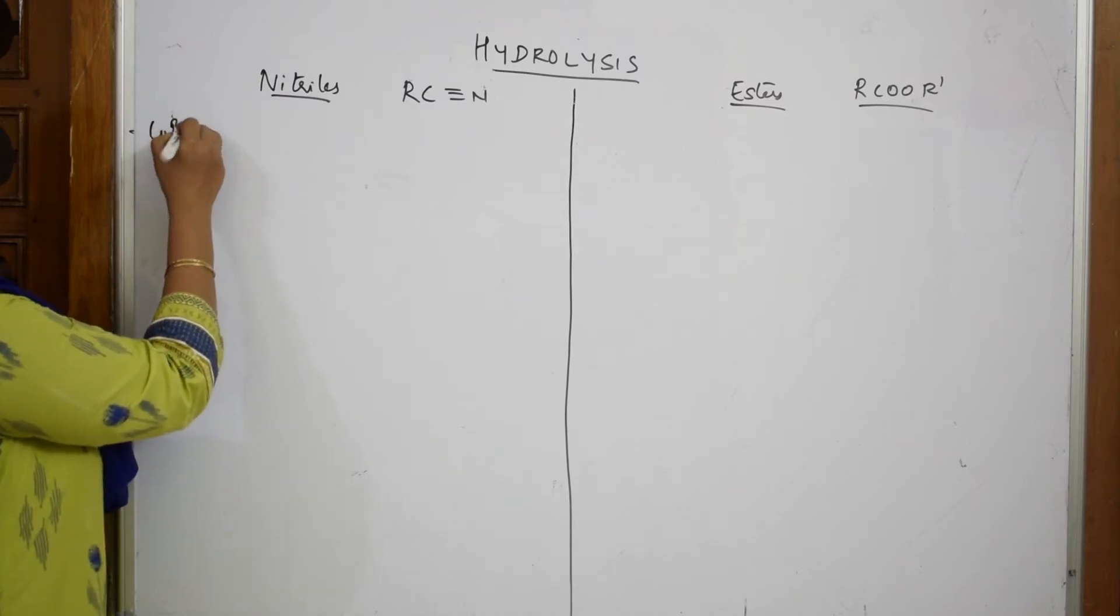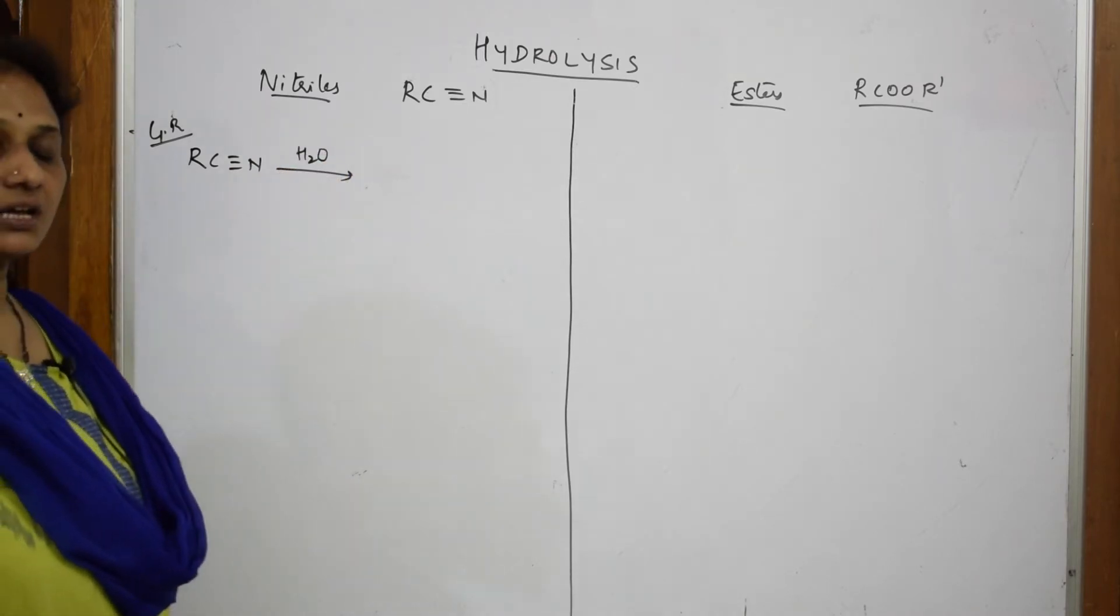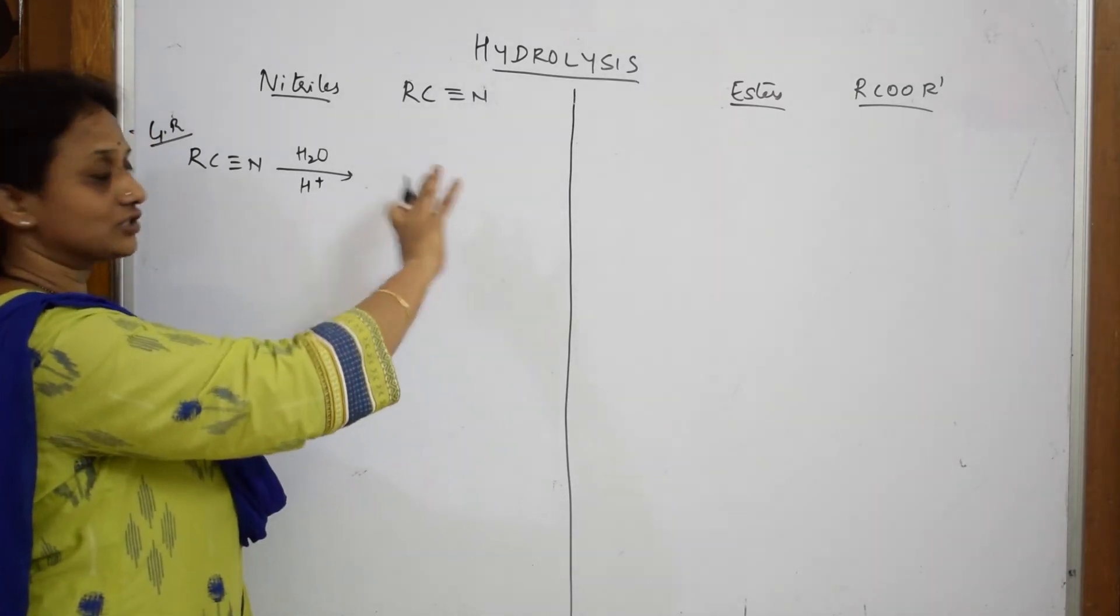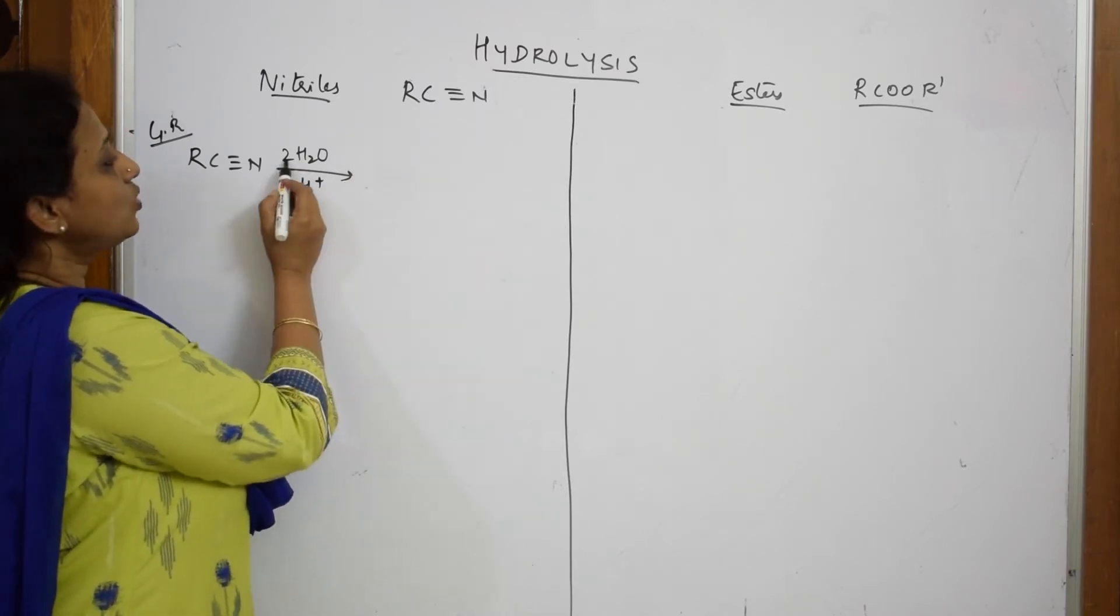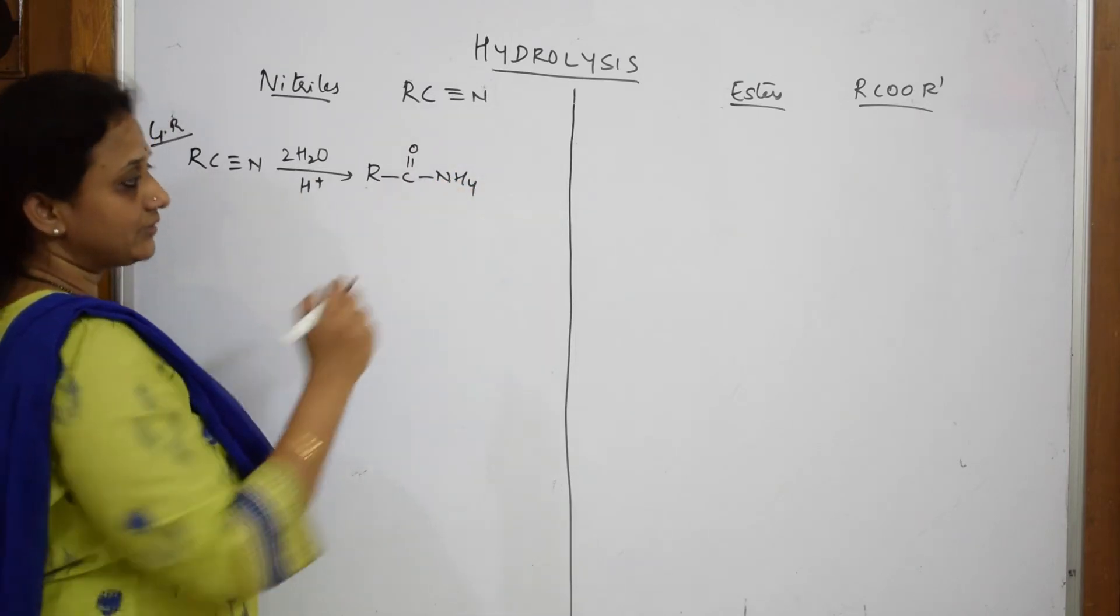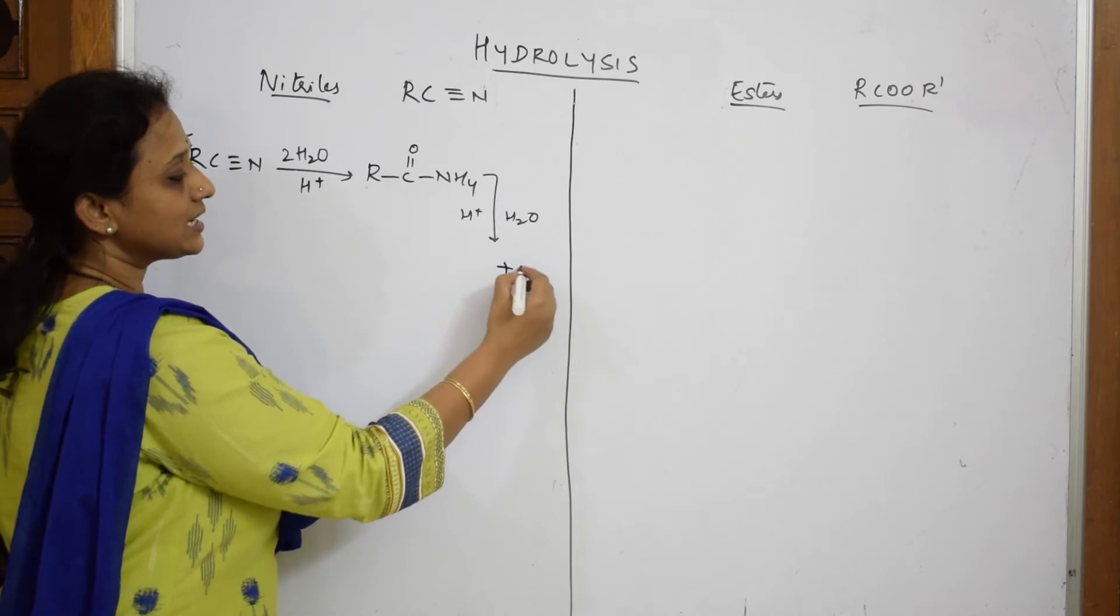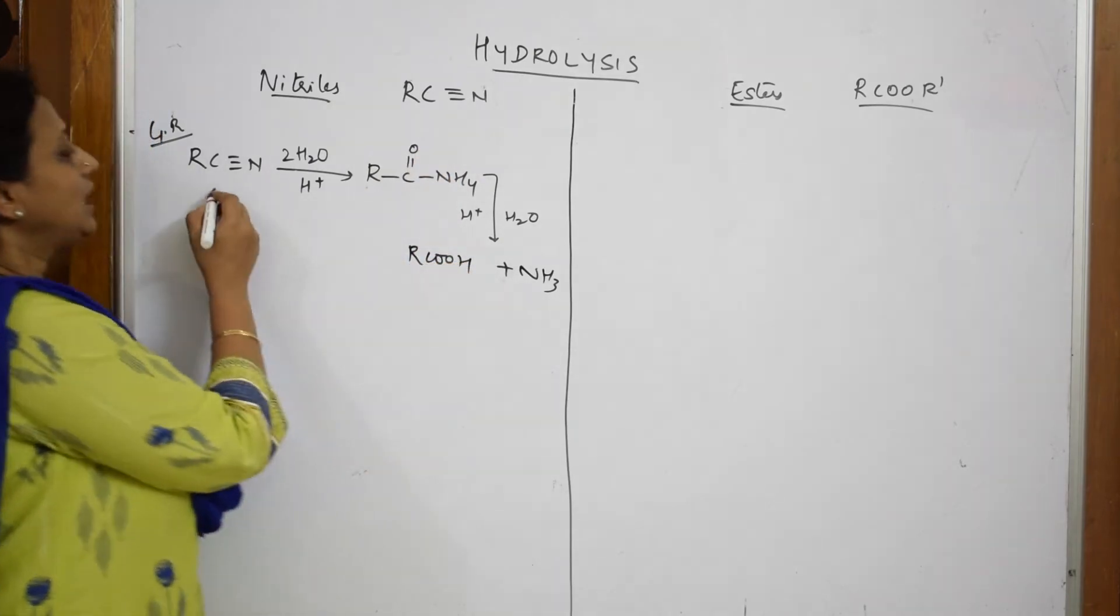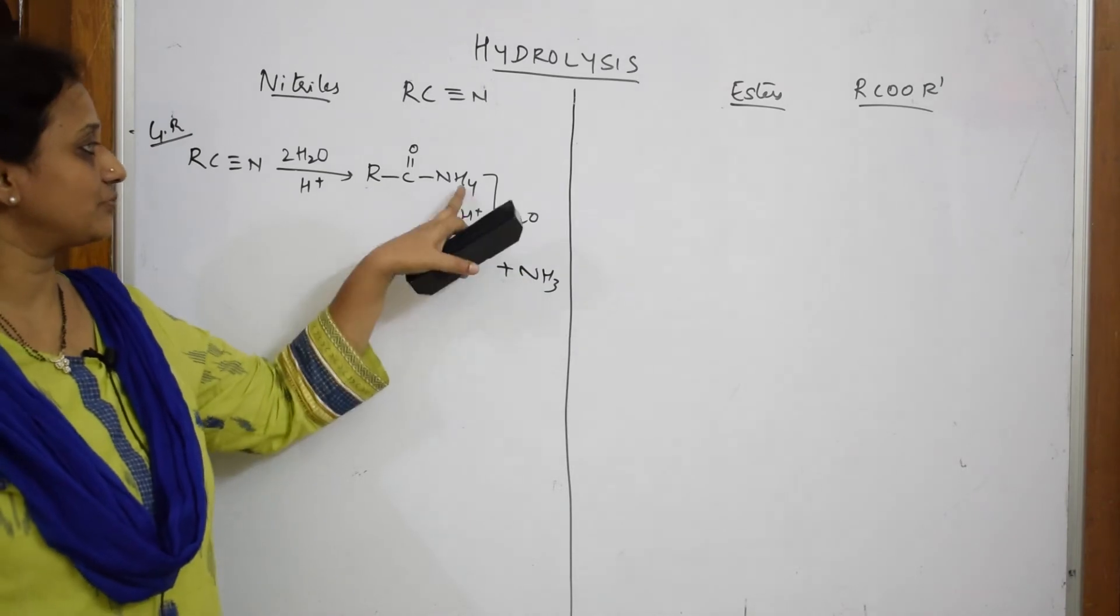When I take a nitrile and hydrolyze it with addition of water in the presence of a mineral acid H+, observe carefully the general reaction. There are four hydrogens and two oxygens total. This adds as C double bond O with NH4. In the presence of H+, the NH4 comes out as NH3, and the remaining oxygen and hydrogen add to form the acid. So nitrile converts to acid.